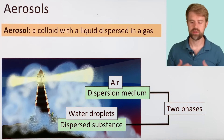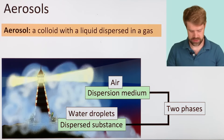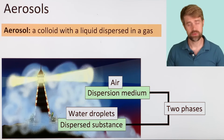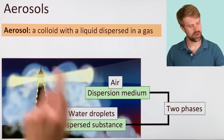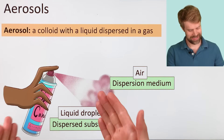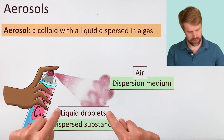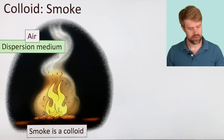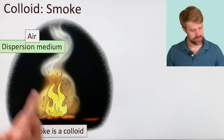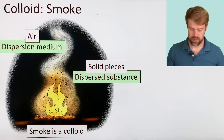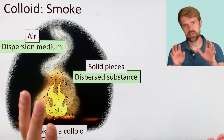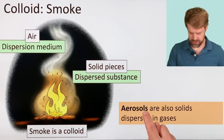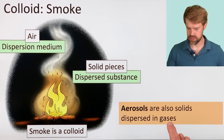There are different types of colloids, depending on what the dispersion medium is and what the dispersed substance is. When you have liquid dispersed in a gas — like fog — you have a type of colloid called an aerosol. You might have heard that word before, maybe with an aerosol spray can. Another type of colloid is smoke. Like fog, the dispersion medium is air, but with smoke, the dispersed substance is a solid — tiny pieces of burnt wood, rubber, or paper. This type of colloid is also called an aerosol: solid dispersed in gas.